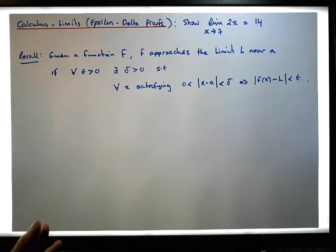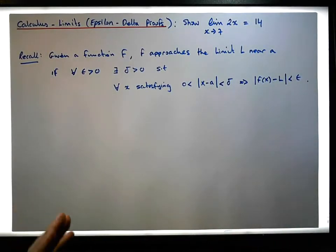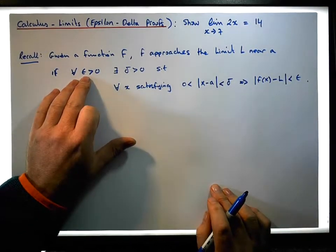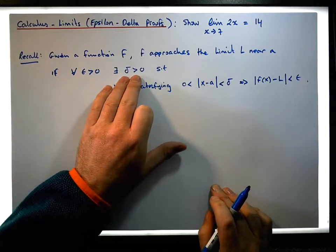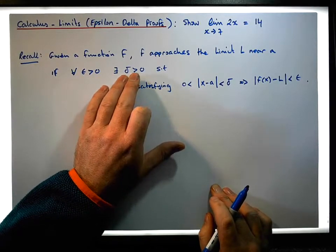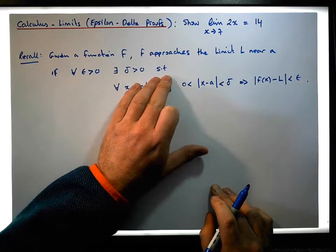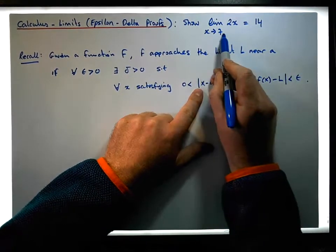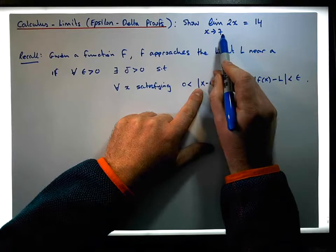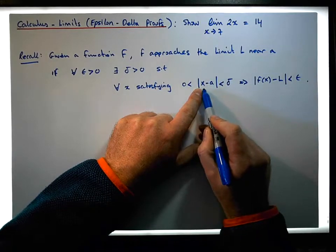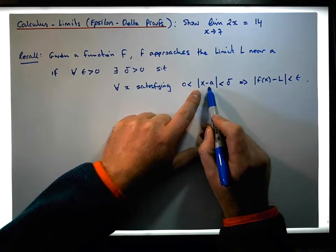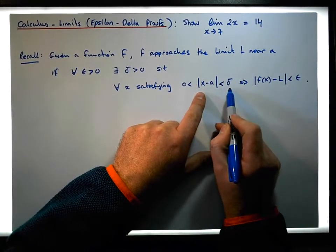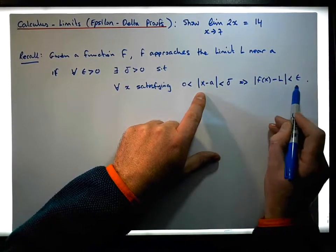So effectively, the definition of a limit says this: if someone chooses a bound around the limit — any epsilon greater than 0 — then we need to find a delta, some number greater than 0, such that the absolute value of x minus a — where x is tending to — for all x within that particular region, that's less than delta, and this implies that f(x) minus L is less than epsilon.